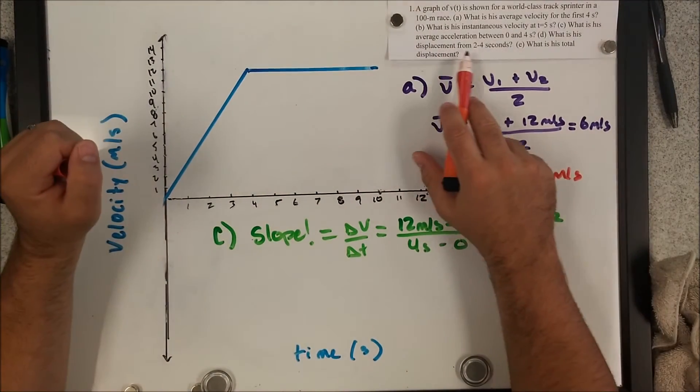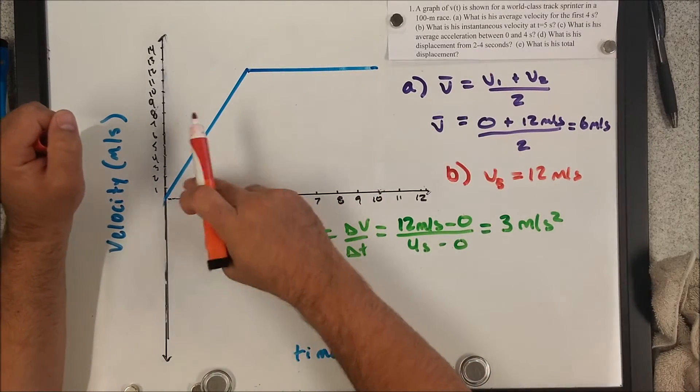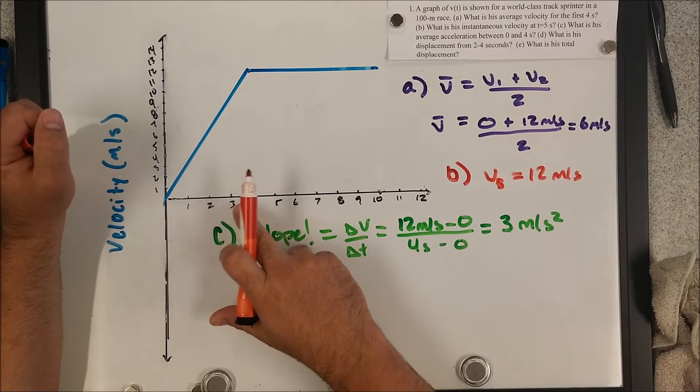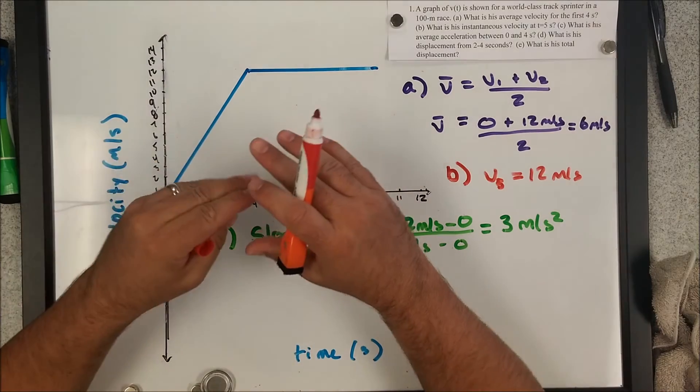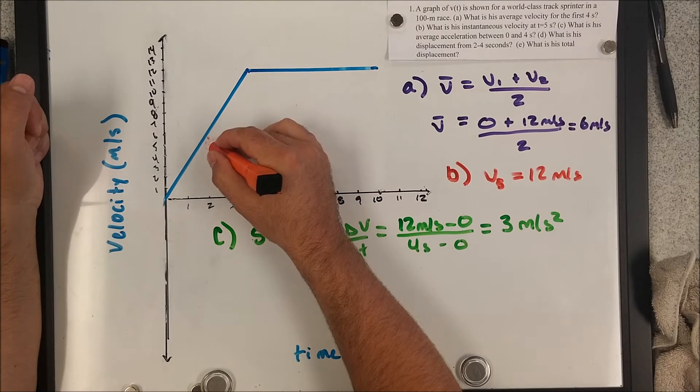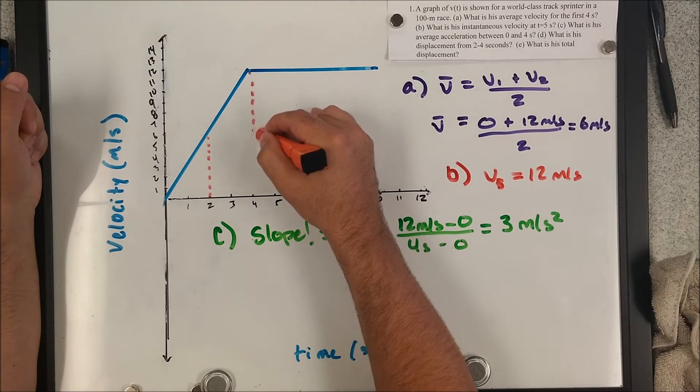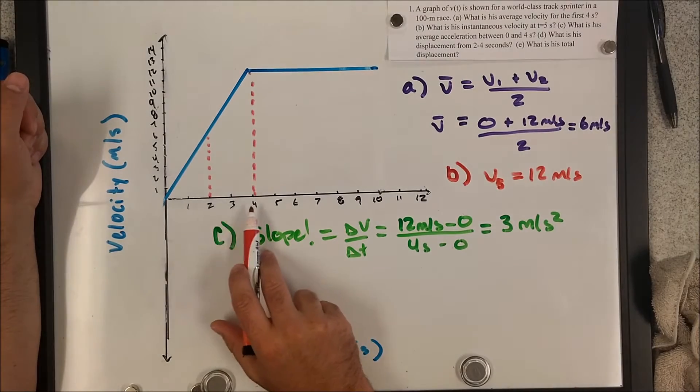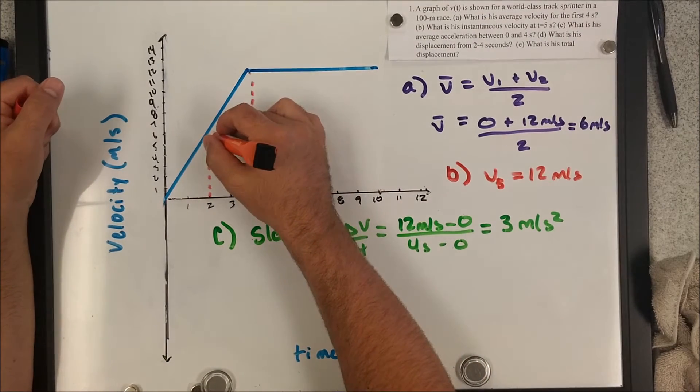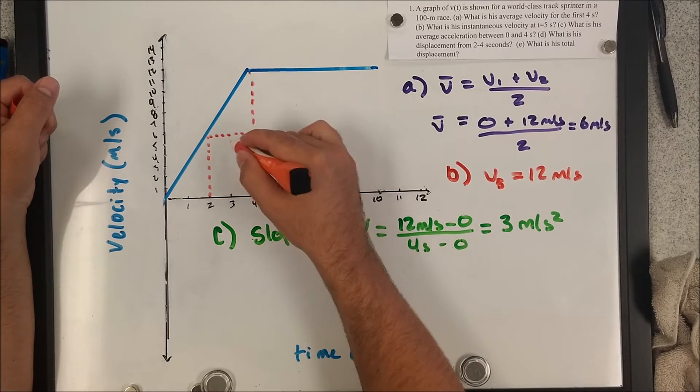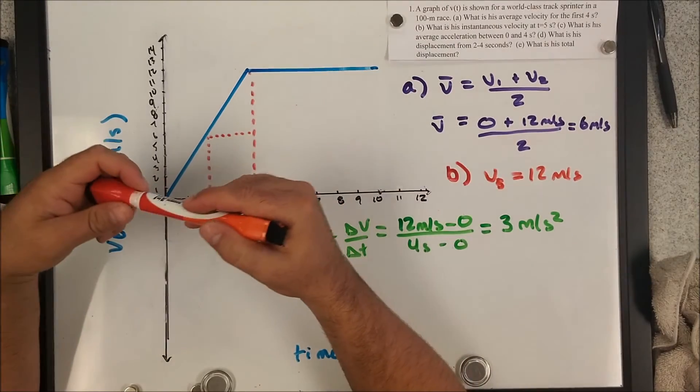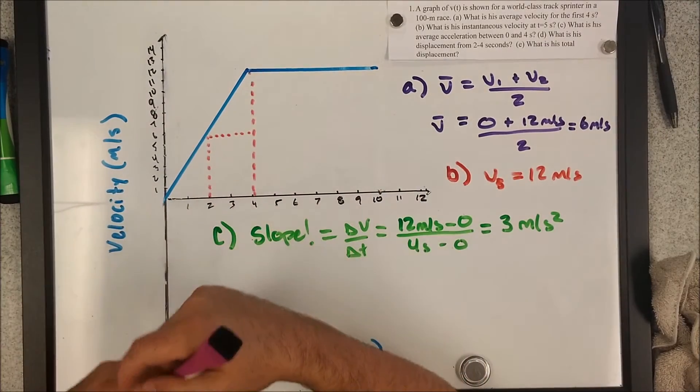D. What is the displacement from two to four seconds? This is a little tricky because it's not including this beginning portion or the end portion. We're looking at how far do they travel just between two and four seconds. Remember, the area under a slope for a velocity time graph is displacement. So for that, we're going to figure out the area between the second and fourth second. We've got to find this area. And I see two very clear shapes here. I see this triangle up here and this rectangle down here. So I'm going to find the area of each of these and then just add them together.